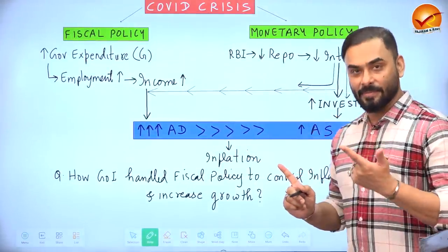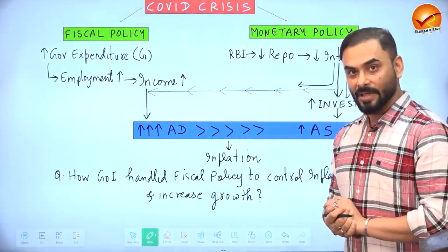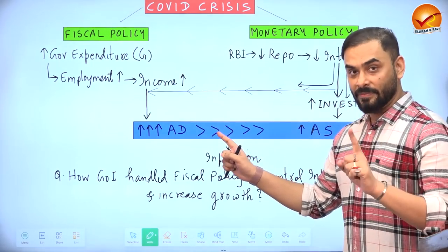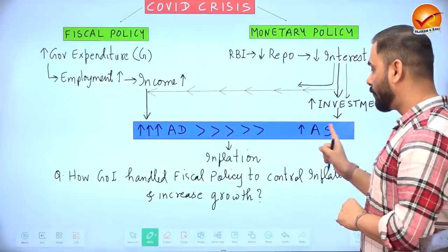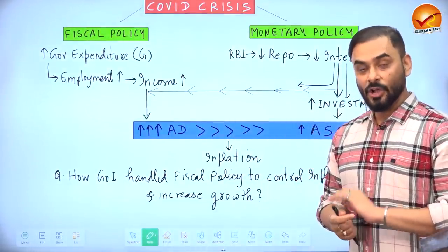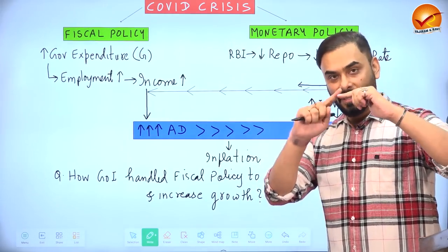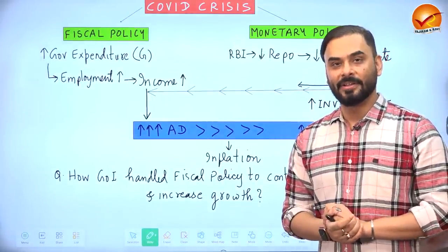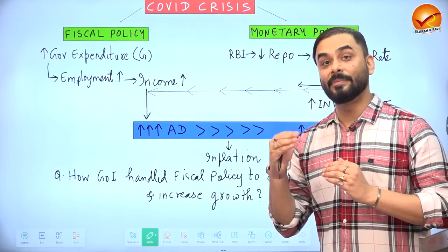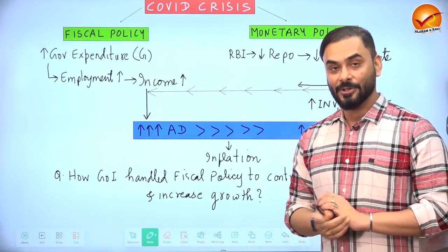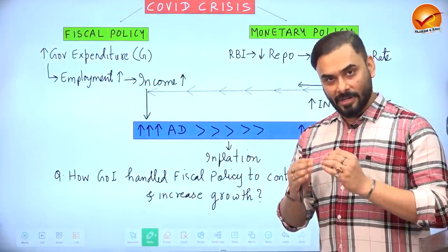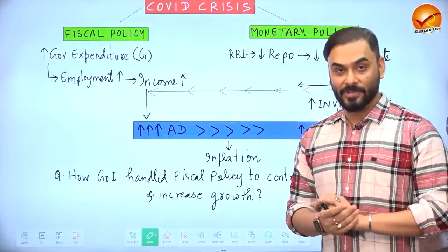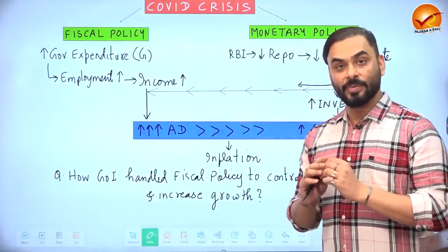However, supply takes time to produce goods and services — it responds more slowly — while demand increases very fast. After COVID, aggregate demand increased much faster than aggregate supply. Whenever demand is high and supply is low, it leads to inflation. So inflation occurred in the economy, and initially the world had little idea about what was coming alongside this inflation.